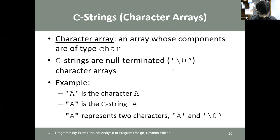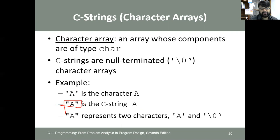A character array whose components are of type char is called a C string when it is null-terminated. For example, the C string "A" represents two characters: the character A and a backslash-null terminator. When you use double quotes, it becomes a C string with the null terminator appended. If you declare 'char name[16]', the largest string it can store has 15 characters, because the last position is always occupied by the backslash-null.